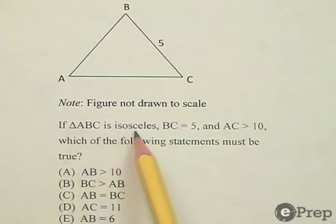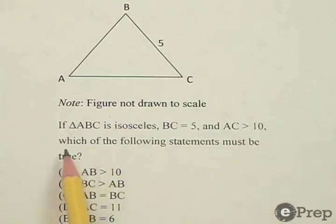If triangle ABC is isosceles, BC equals 5, and AC is greater than 10, which of the following statements must be true?